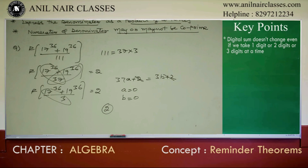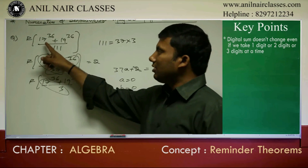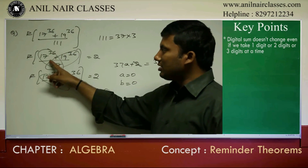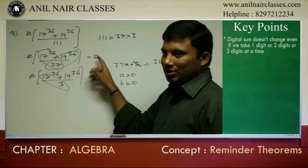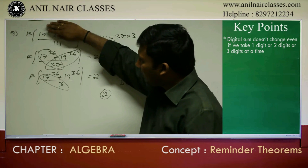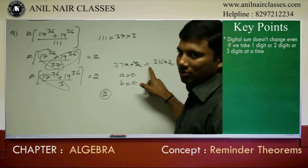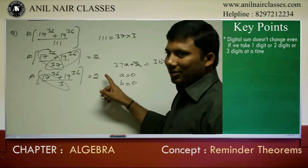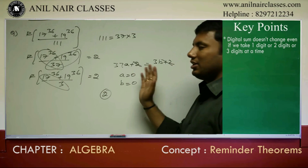Triple 1 means 37 into 3. So 17^36 divided by 37 gives remainder 1, and 1 plus 1 is 2. This numerator when divided by 37 gives 37a plus 2. The numerator when divided by 3 also gives 3b plus 2. Equate them.